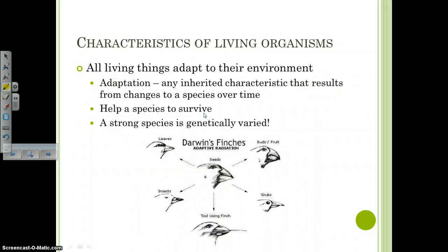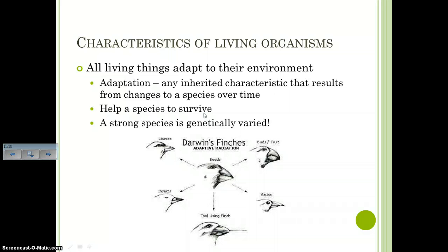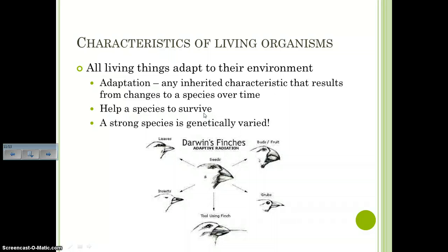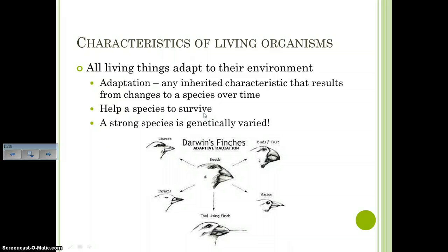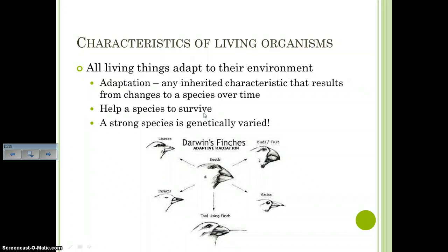Number twelve: all living things adapt to their environment. An adaptation is any inherited characteristic that results from changes to a species over time — a trait that helps the species to survive. For example, a cheetah's ability to run really fast is an adaptation that makes it better suited for its environment. An organism well adapted to its environment is more likely to survive. A strong species will have a lot of genetic variation — if a disease hits a crop like corn and all the plants are identical, they all die; but with genetic variation, some may survive.